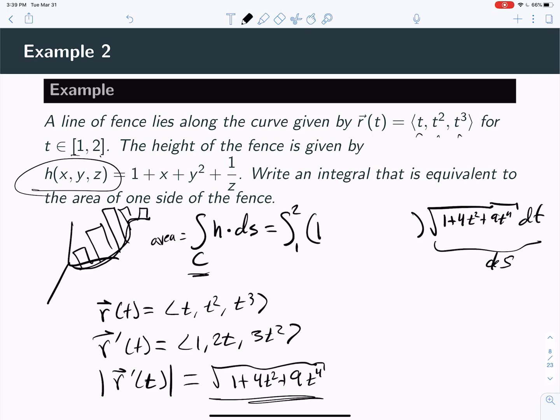So the function of height will be 1 + t, because x equals t, plus t⁴, because y equals t² and then we square it, plus 1/t³, because z equals t³.